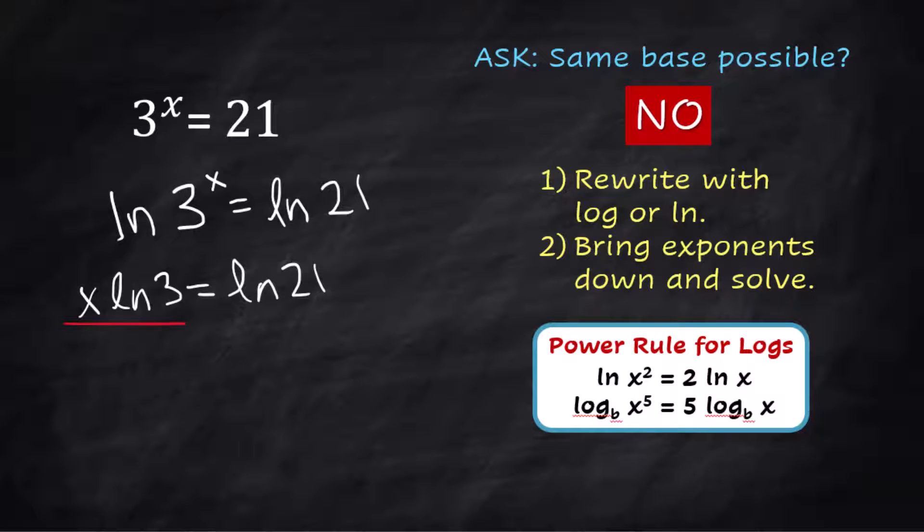Now, the rule says that if you are taking the natural log of both sides, you're allowed to bring that exponent down. So x·ln(3) = ln(21). Then we're trying to solve for x, so we're going to divide both sides by ln(3).